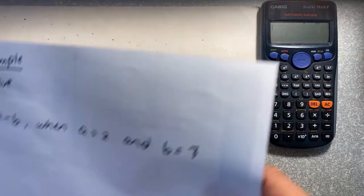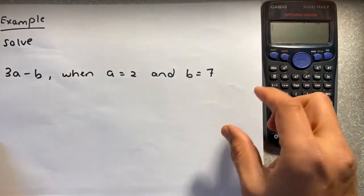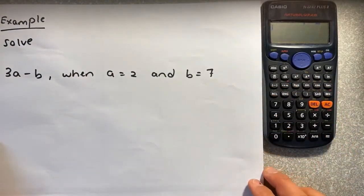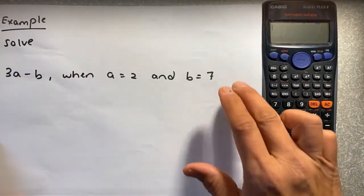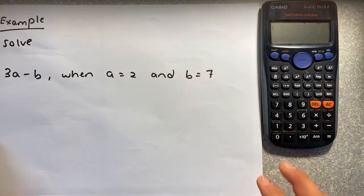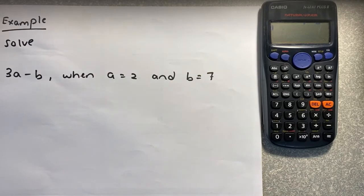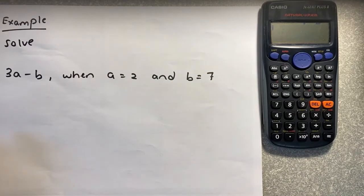For example, we have a question that asks you to solve 3a minus b, when you know that a is equal to 2 and b is equal to 7. So what do you do? Very simple.